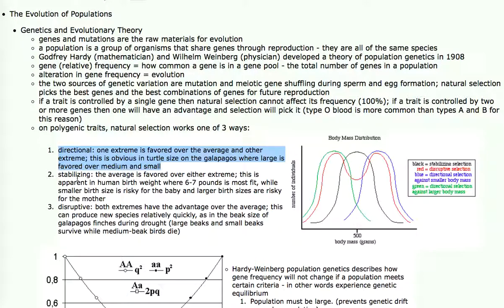Stabilizing selection is where the average is favored over the extremes. In this case, you get an even narrower curve distribution in the middle, whereas there are individuals that are far less than 500 grams and individuals that are far greater than 500 grams. With stabilizing selection, that's narrowed.